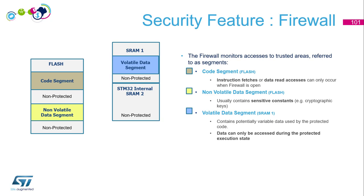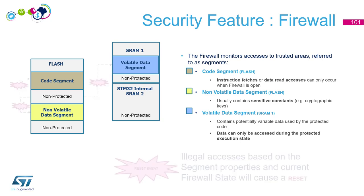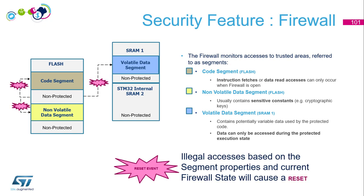For the volatile data segment, there is an additional property: execute. That means we can put some code to execute in this volatile data segment. Any illegal access based on the segment properties and the current firewall state will cause a reset. This is the main principle of the firewall.